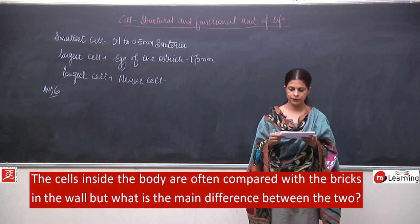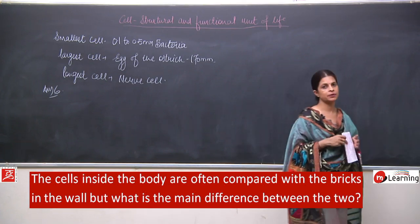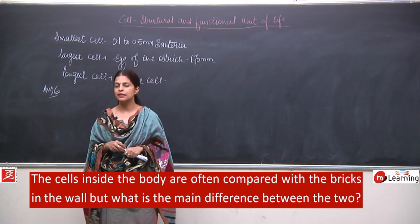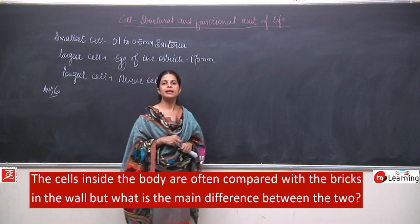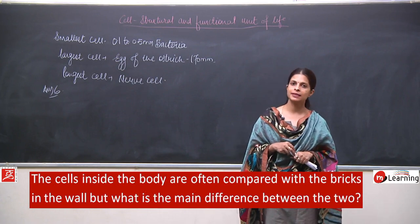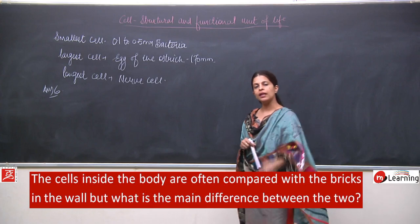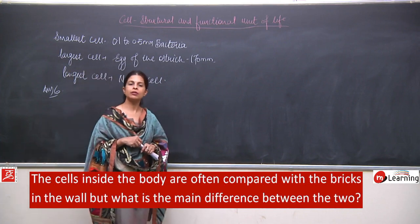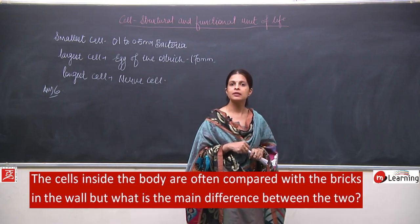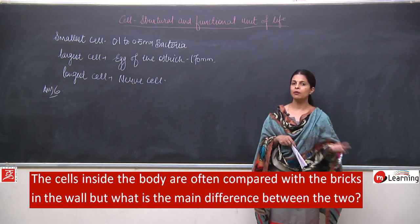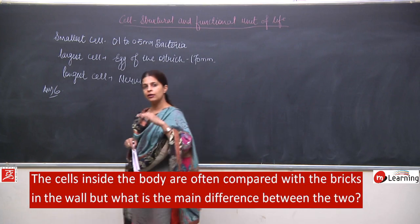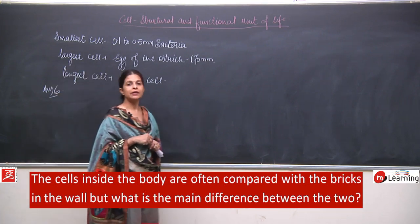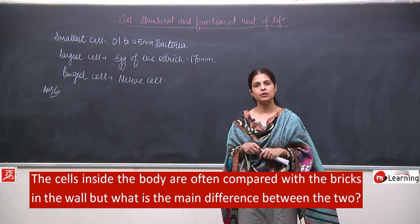Question number 6: Cells inside the body are often compared with the bricks in a wall, but what is the main difference between the two? The comparison is done between bricks and cells. When a wall is formed, many bricks are utilized. In the same way, the smallest unit of any living organism is the cell. Cells combine to form tissues, tissues form organs, organs form organ systems, and organ systems form a body.